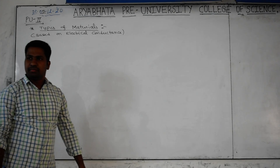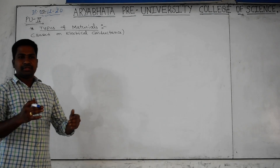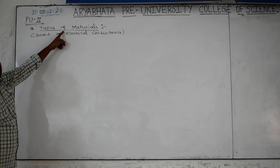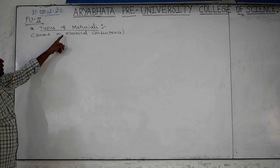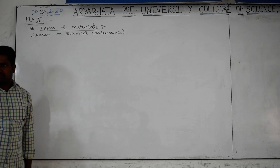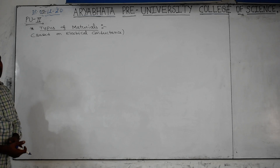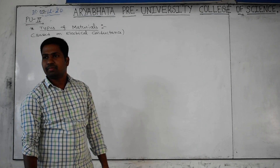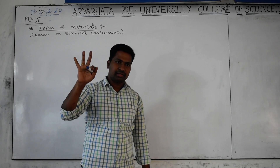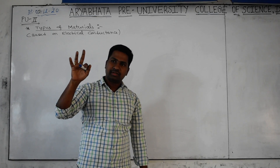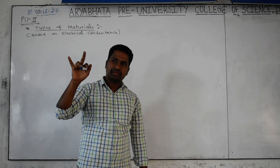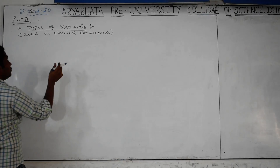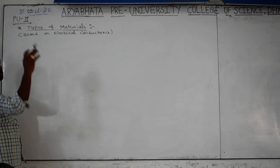Good morning. We will see the condition for study topic: types of materials based on electrical conductance property. Based on electrical conductance, materials will be classified into three categories. We have some idea already - we discussed this previously.